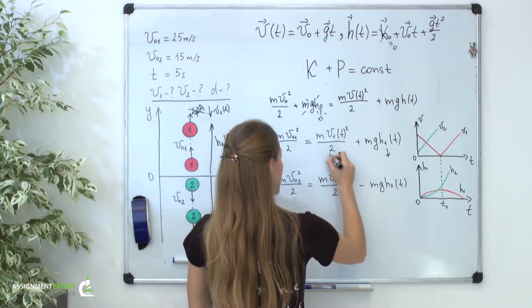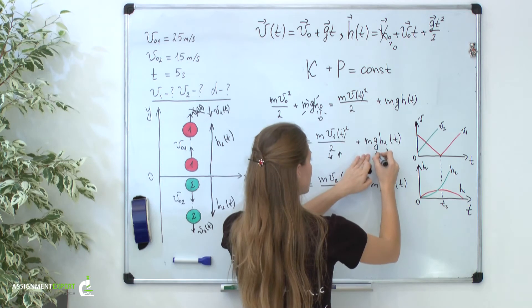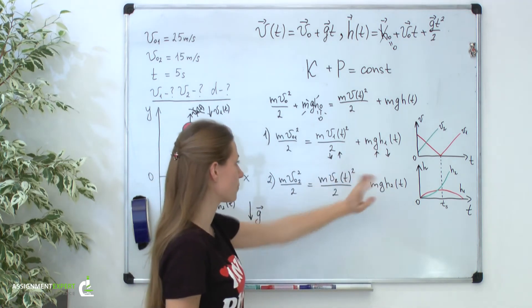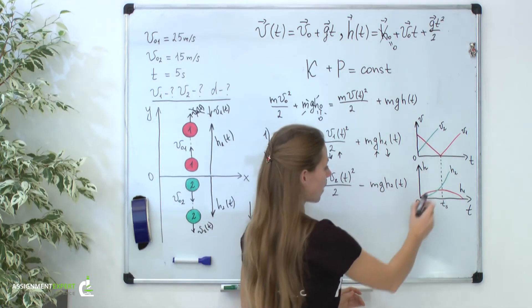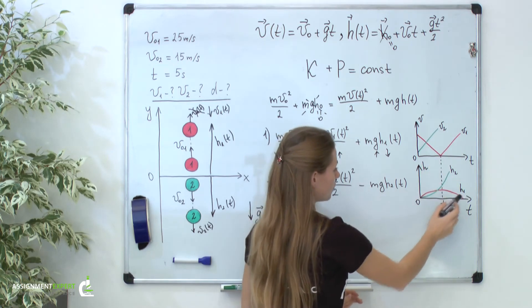With decreasing the kinetic energy, our potential energy should increase. Indeed, we can see it in our pictures. Look at it. With decreasing kinetic energy, our potential energy increases. And the converse statement is true.